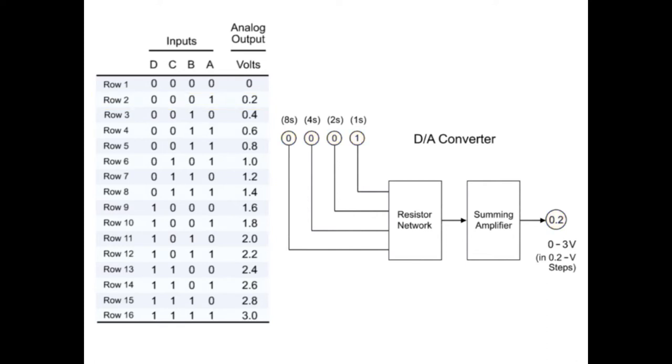If 4-bit value 0, 0, 1, 0 arrives at the input, the voltage output is 0.4 volts. With each subsequent increase in the binary value, the voltage increments by 0.2 volts.